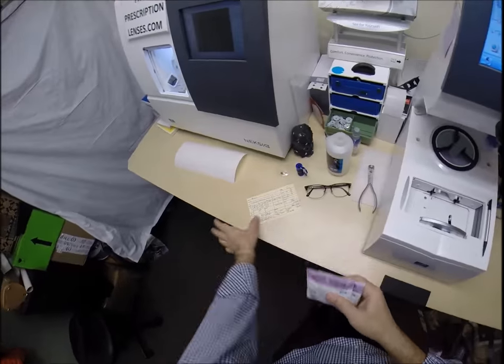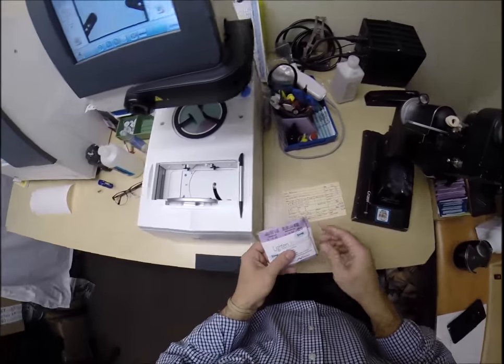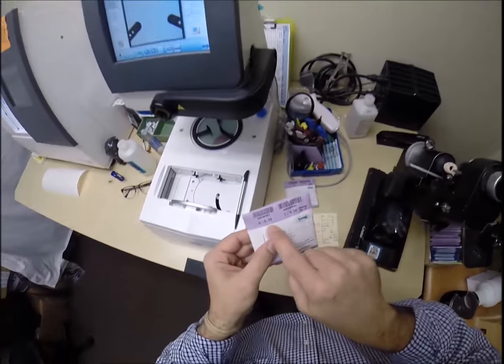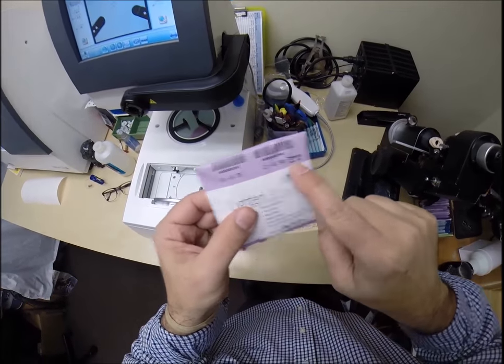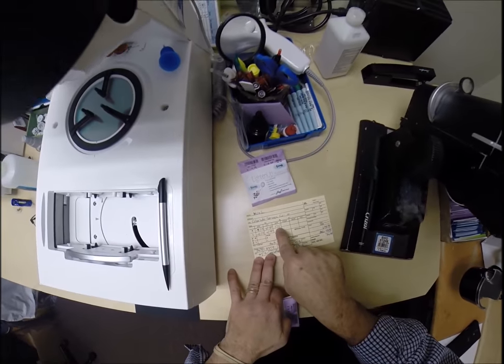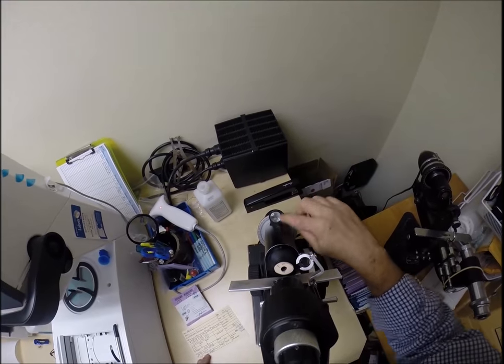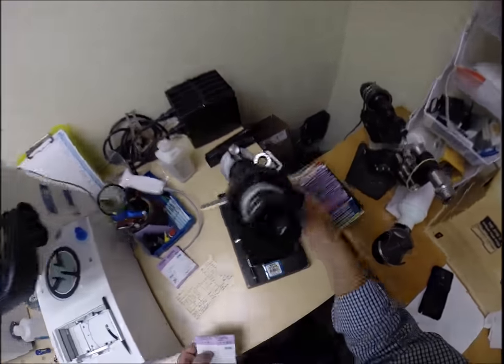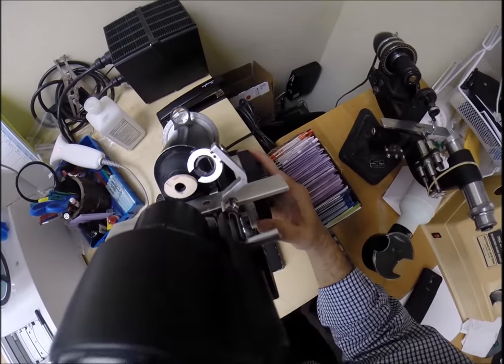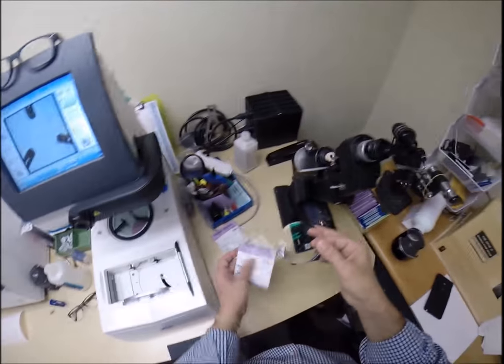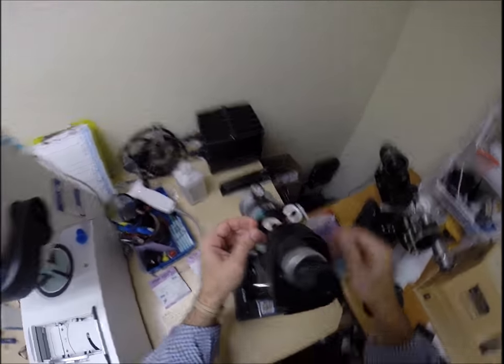So let's come down here to my lensometer. Get your lenses prepped. Your right lens is minus 575, minus 50 at 170. Turn the axis wheel to 170. Let's make sure that is on. First one of the day that gets shipped. Take the lens out of the protective sleeve.